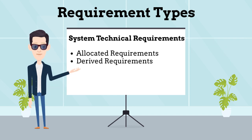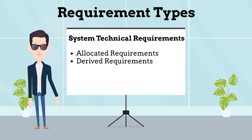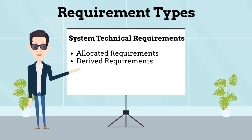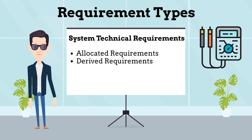The next requirement type is System Technical Requirements. These requirements result in both allocated and derived requirements. Allocated requirements flow directly from the system requirements down to the elements of the system. Derived requirements are dependent on the design solution, and so are sometimes called design requirements. They include internal interface constraints between the elements of the system. An example of an allocated requirement is: the jet electronic system shall function on 12V DC current.